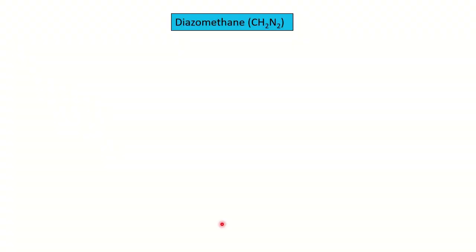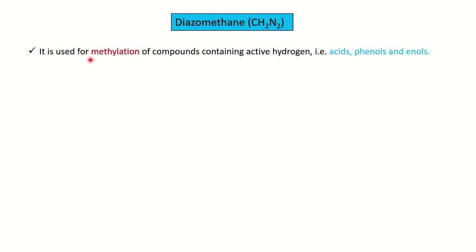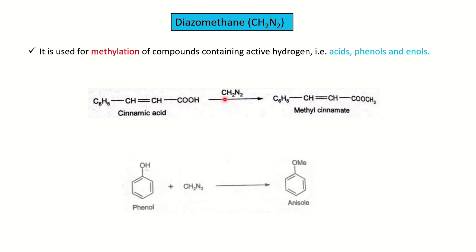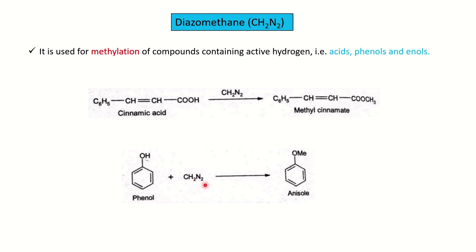First, we will see diazomethane and its uses. The first and most widely found use is methylation of active hydrogen compounds. Active hydrogen compounds are those where hydrogen can be easily exchanged, like acids, phenols, or enols. For example, carboxylic acid having a COOH group in the presence of diazomethane: the hydrogen is converted to CH3 and the acid is converted into an ester. Similarly, phenol or alcohol in the presence of diazomethane has H replaced by methyl, converting it into an ether.